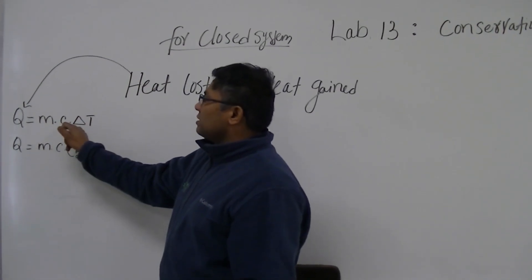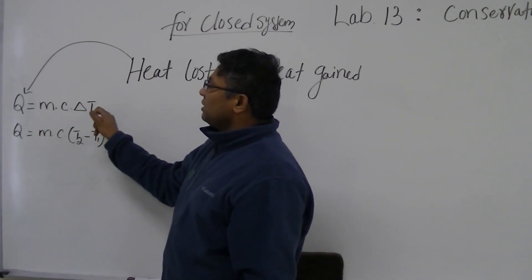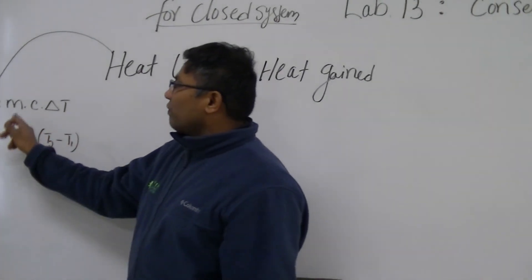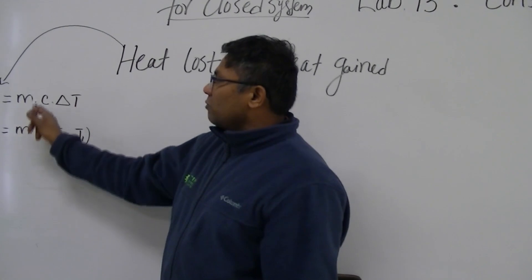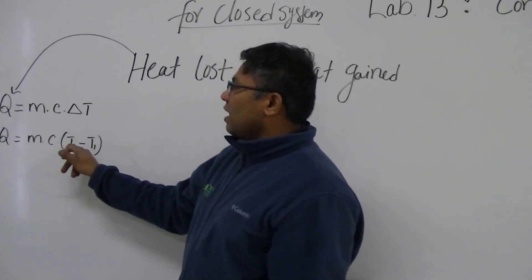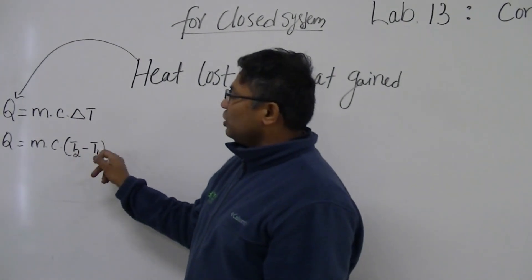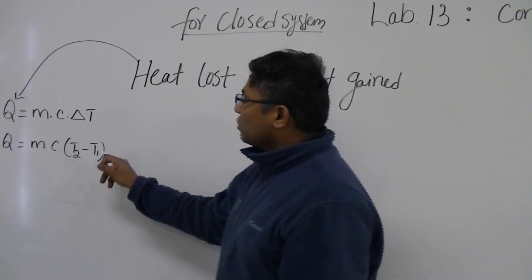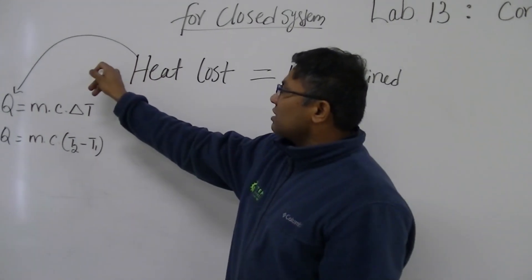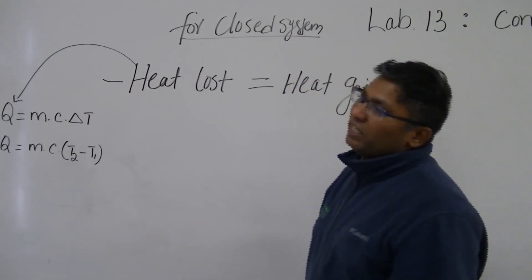Heat Q equals mass times C, the specific heat, times Delta T — Delta T means change in temperature. If I rewrite this equation, it will be mass times specific heat times T2 minus T1, which is final temperature minus initial temperature.